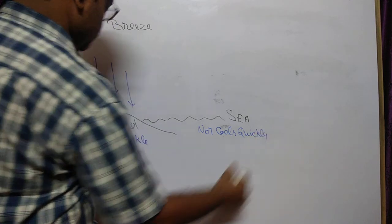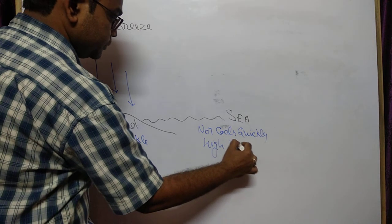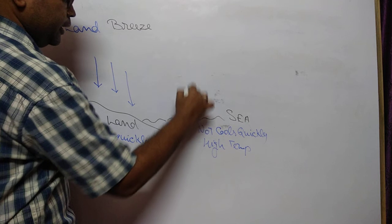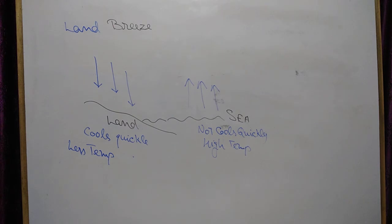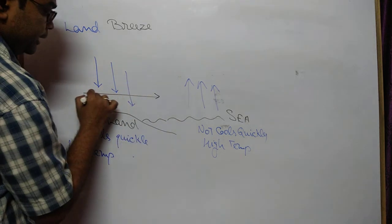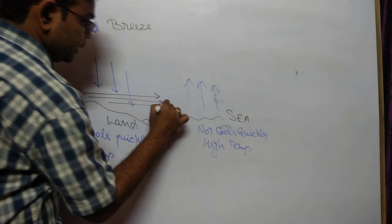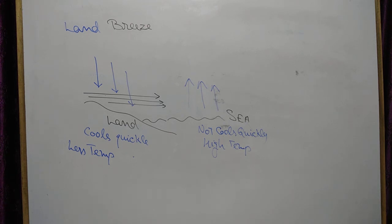The sea receives heat energy slowly, so it releases heat energy slowly and does not cool quickly. The sea has a higher temperature during nighttime. So air above the sea surface moves upward, making some space. To fill that space, air from the land side moves towards the sea side. This type of breeze is known as land breeze, because they are moving from the land side. That is the concept of land breeze and sea breeze. Hope you understand — read the same topic in your book. That's all for today, thank you.